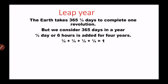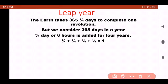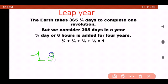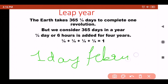Now we will study about a leap year. The Earth takes 365 and one-fourth days to complete one revolution, but we consider only 365 days in a year. The one-fourth day, or six hours, is carried over each year. After four years, one-fourth added four times makes one full extra day, and this one extra day is added in the month of February.